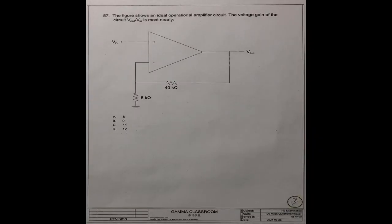Question number 57. The figure shows an ideal operational amplifier circuit. The voltage gain for the circuit, V out divided by V input, is most nearly what number. They have four numbers.